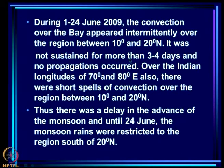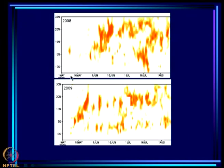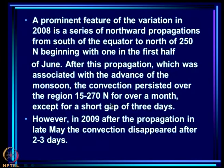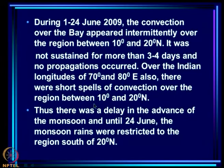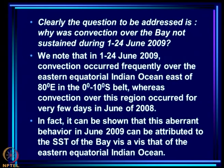During 1 to 24 June 2009, convection over the bay appeared intermittently over the region between 10 and 20°N. It appeared and disappeared, not sustained for more than 3 to 4 days. No propagations occurred over the Indian longitudes of 70 and 80 degrees either — there were only short spells of convection between 10 and 20°N — resulting in a delay in the advance of the monsoon, with rains restricted to south of 20°N until 24 June.